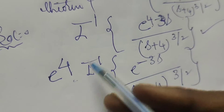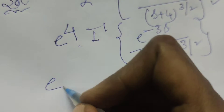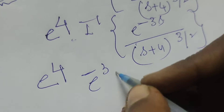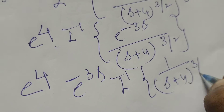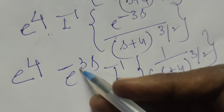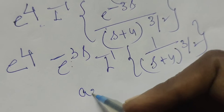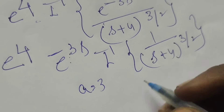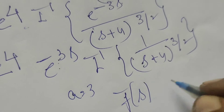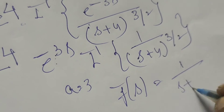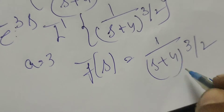Next, write e^4 into the inverse Laplace transform of e^(-3s) / (s+4)^(3/2). Here, from e^(-3s), we identify a = 3. Now, assuming F(s) equals 1 / (s+4)^(3/2).